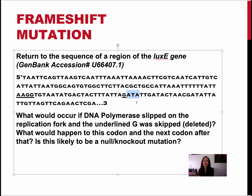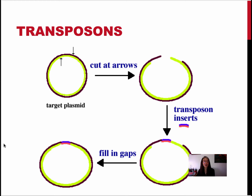When we think about a frameshift mutation, I'll pose the question: is this likely to be a null or knockout mutation? The very last thing I want to talk about in this mini-lecture is a phenomenon called transposons. Transposons are literally jumping genes, and they actually encode for their own movement into and out of a region of DNA. They can be simple insertion sequences that just code for movement, or a transposon can actually contain extra genes.